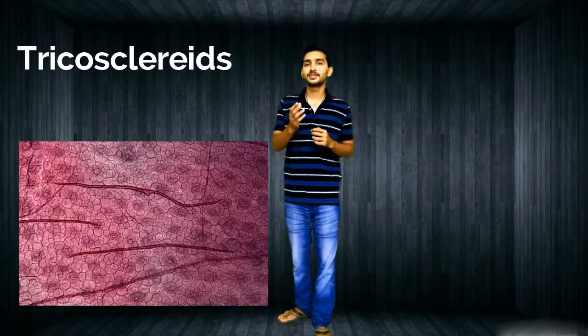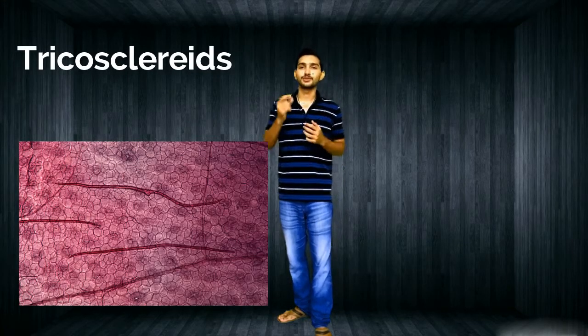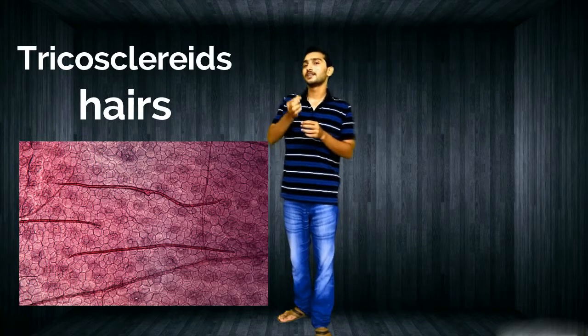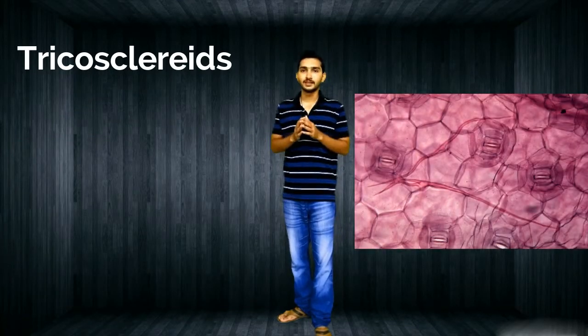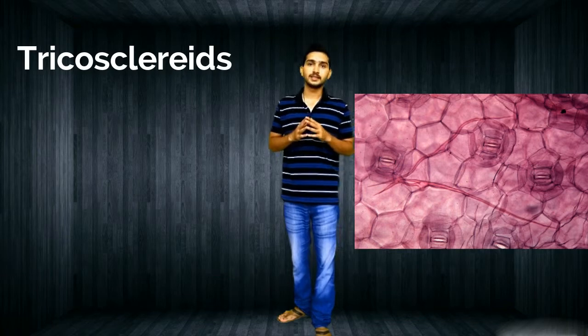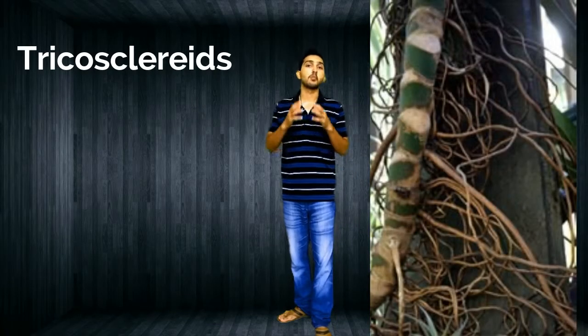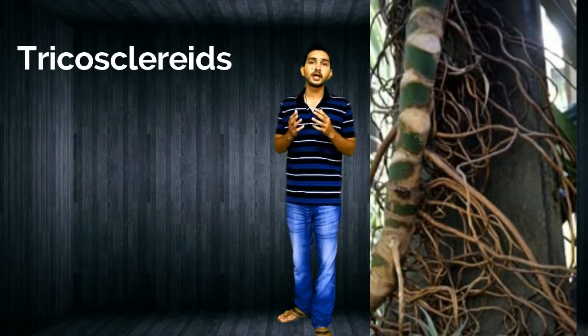Now let's talk about trichosclerids. The name itself denotes that these are hair-like, showing branches like hairs. Examples include aerial roots of Monstera and leaves of Olea.